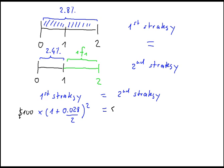In the second strategy, the $100 grows at 1 plus the 6-month spot rate of 0.024 divided by 2 for the first semi-annual period. The cash proceeds are then reinvested at the forward rate starting in 6 months for 6 months, so we multiply by 1 plus the forward rate divided by 2.